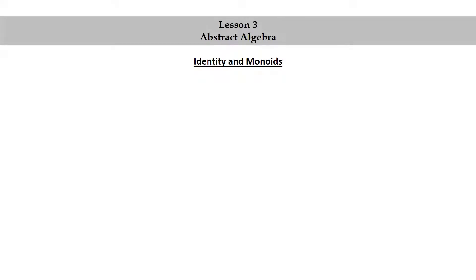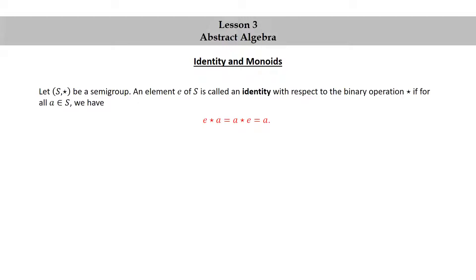Identity and Monoids. Let S★ be a semigroup. An element E of S is called an identity with respect to the binary operation ★ if for all A in S, we have E★A = A★E = A. A monoid is a semigroup with an identity.